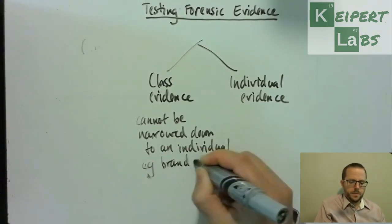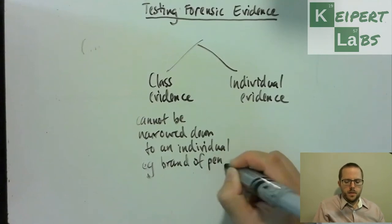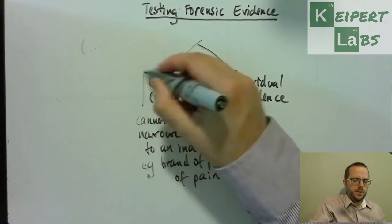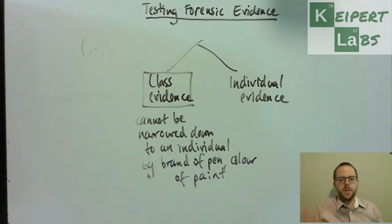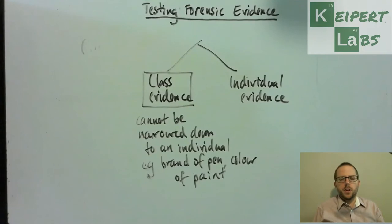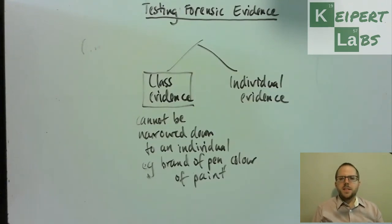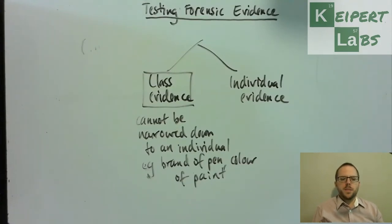For example, looking at the brand of pen or the color of paint found at a crime scene. Say you're looking at a scenario where there's a threatening or ransom note that's been written. You can examine the pen, do some tests on the ink, and identify that the ink came from a Pilot ballpoint 0.7 millimeter blue pen. You might narrow down its year of manufacture or which batch it came from, but that doesn't necessarily narrow you down to a specific pen. It can get you to a class of pen — a category of that item — but it can't get you any closer than that. That's what class evidence involves.